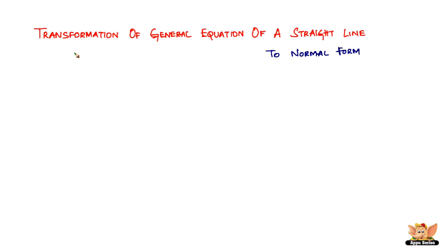In this video, let us look into another transformation of the general equation of the straight line. In this case, we are going to transform it to the normal form. We know that the general equation of the straight line is given by ax plus by plus c equal to zero.